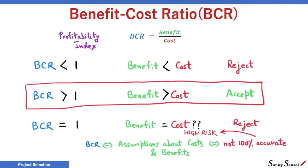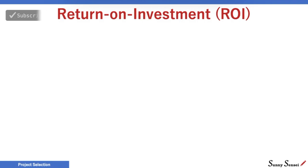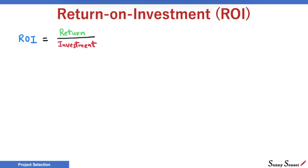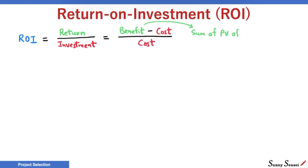Let's move to the next topic: Return on Investment. ROI is also a profitability index and is a ratio of return to investment. Return is the net gain — benefit minus cost. Investment is the cost. Benefit is the sum of present values of all positive project cash flows. Cost is the sum of present values of all negative cash flows.